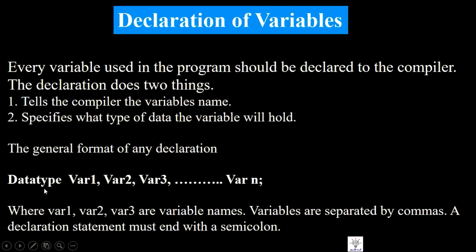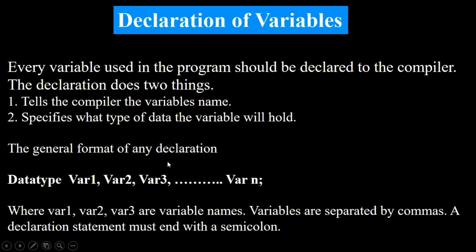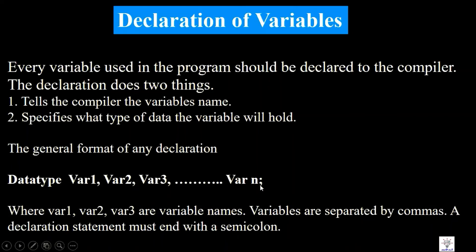The general format of a variable declaration is: data_type variable1, variable2, variable3; — if multiple variables share the same data type, they can be separated by commas. A declaration statement must end with a semicolon. The semicolon is used in C language to mark the end of a statement.